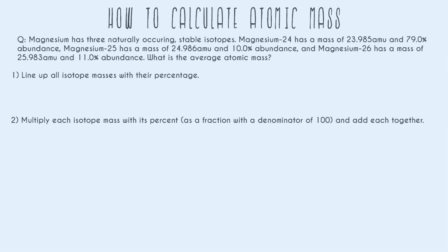So number one, you always just want to line up all your isotope masses and match them with their percent. In this question, it's pretty easy. We were given all three masses and percents, but I think it can still help just to write it down visually on the page so we know we're not making a mistake. So now we can clearly see what isotope goes with what percent.